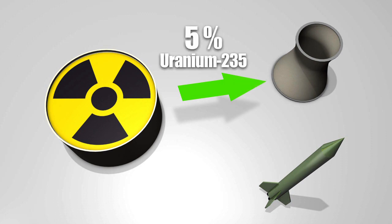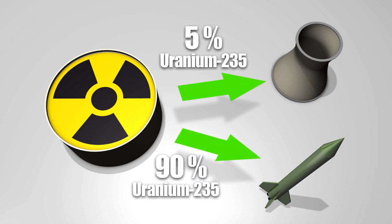To generate power, uranium-235 must be enriched to 5%. Uranium enriched to 90%, however, can be used to make a nuclear weapon.